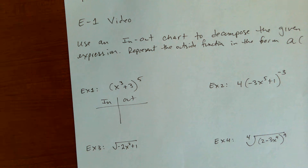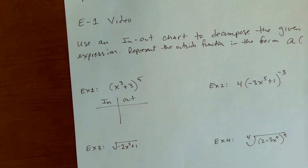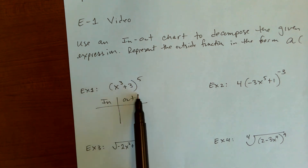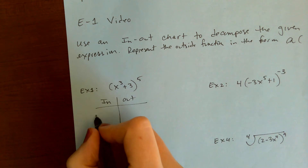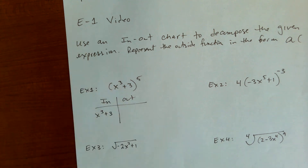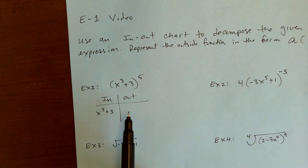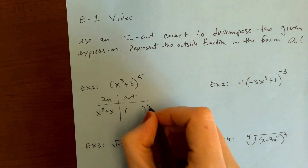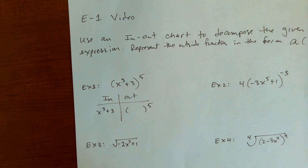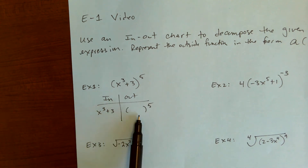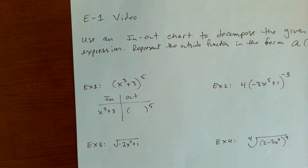For a while, the functions we encounter — if there is an inside function — it's going to be inside of parentheses or under a radical. So you look here, you see these parentheses. What's inside the parentheses? X to the third plus three. And then for the outside function, you just take out the inside and you've got blank parentheses to the fifth. So the inside function is x to the third plus three; the outside function is blank to the fifth.